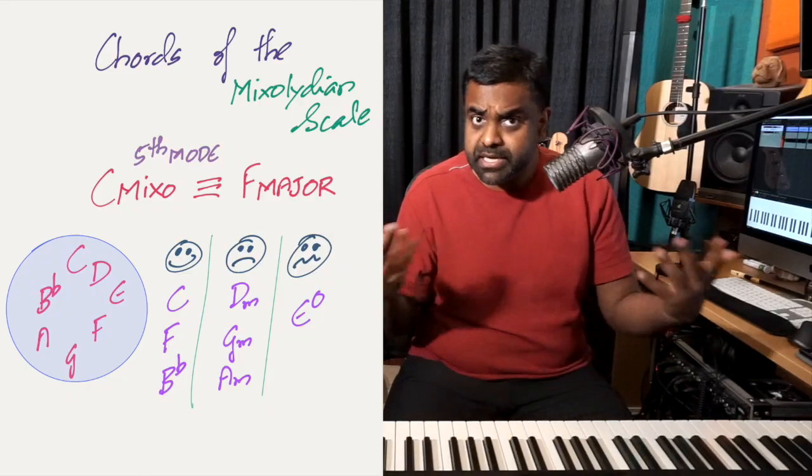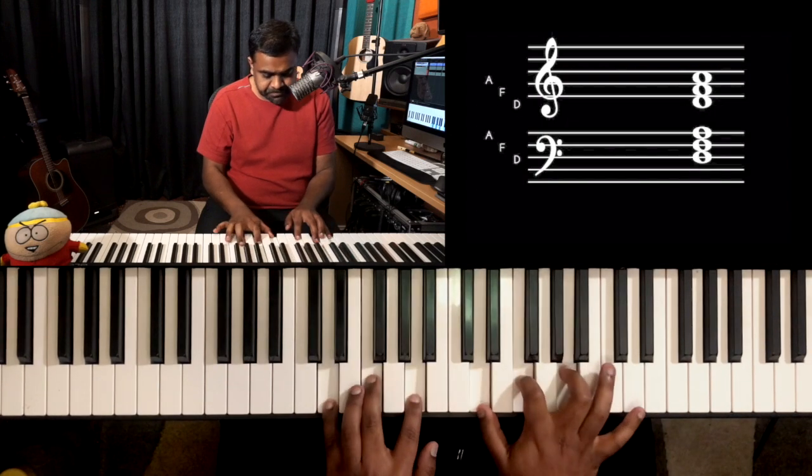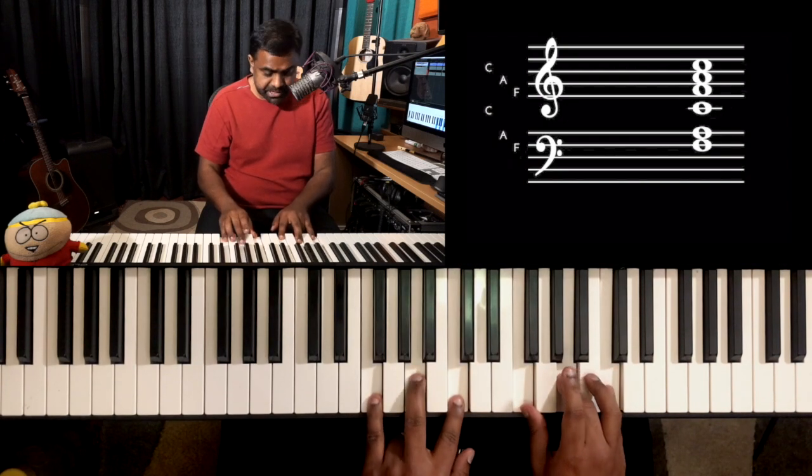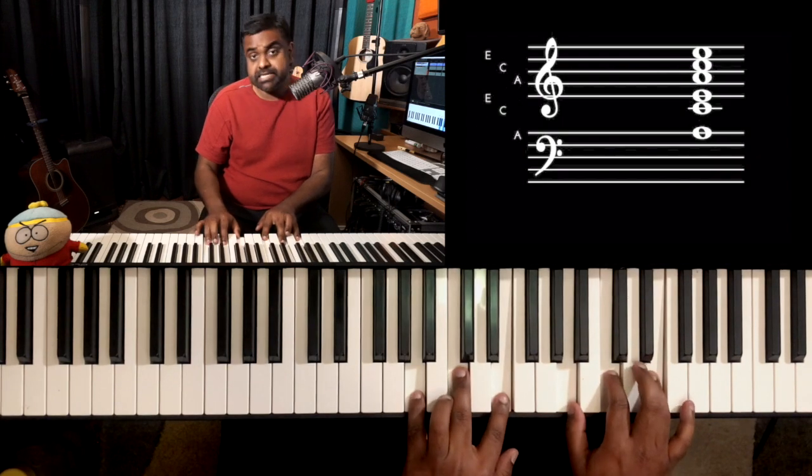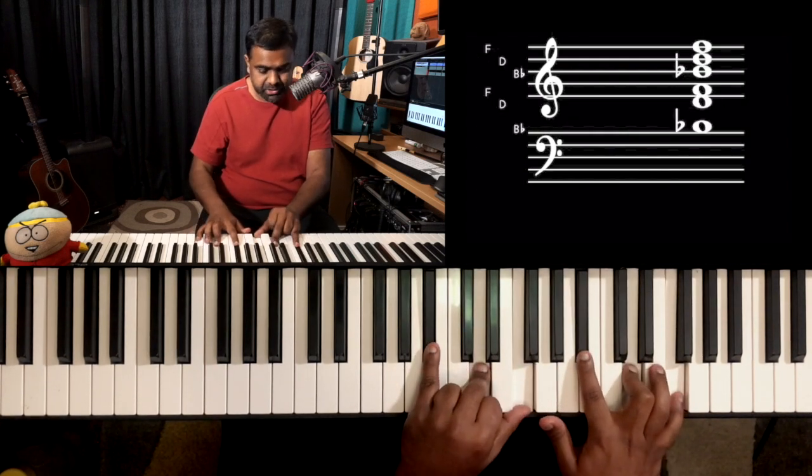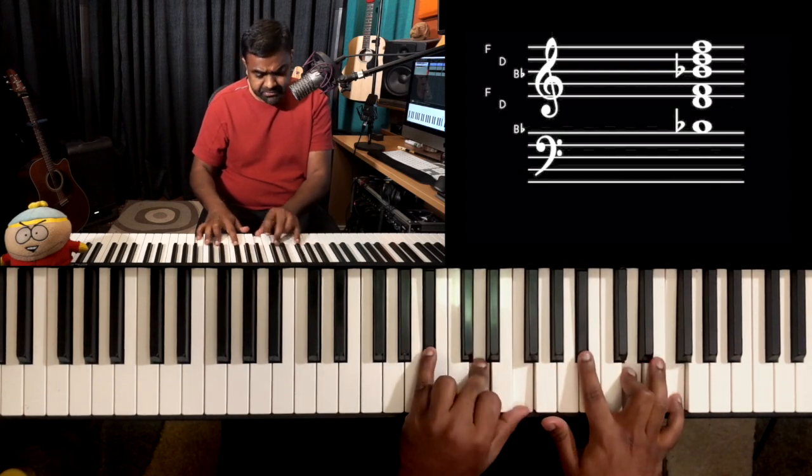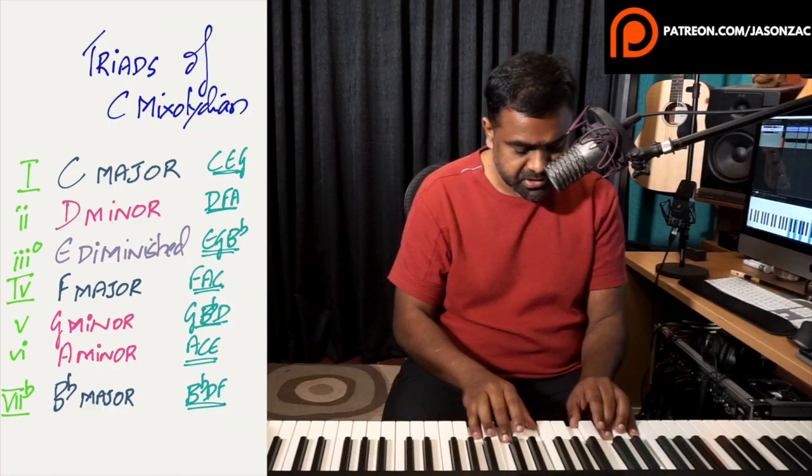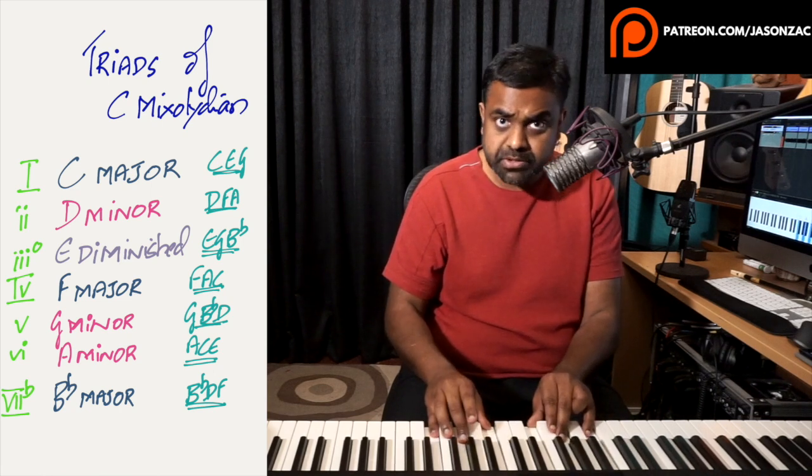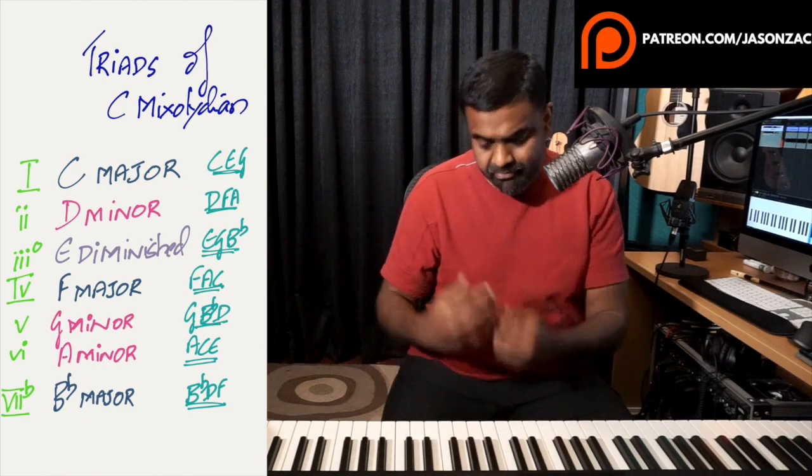Another way of doing it is the usual triad approach where you write down the entire scale in a neat round circle, and then you get triads. C Major, D Minor, 3 Diminished (E Diminished), 4 Major (F Major), 5 Minor, 6 Minor, 7 Major—rather 7♭ Major. If you look at it with respect to the Major, D♭ is the 7♭. So 1 Major, 2 Minor, 3 Diminished, 4 Major, 5 Minor, 6 Minor, 7 Major, and back to 1 Major.